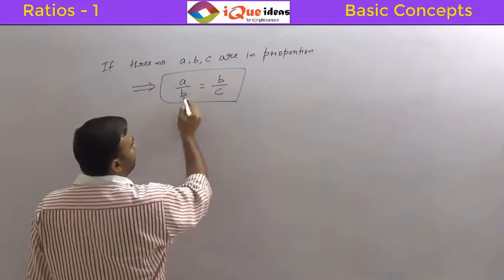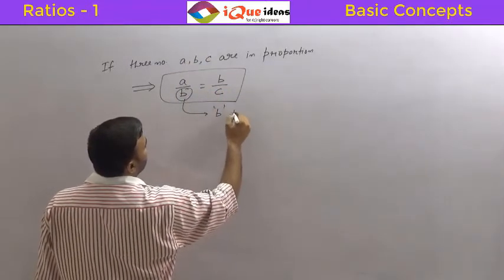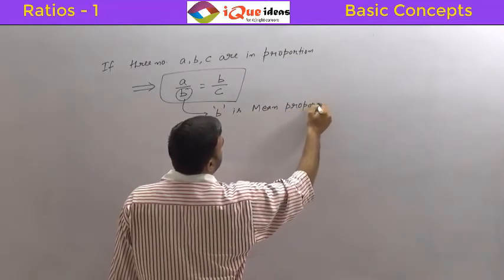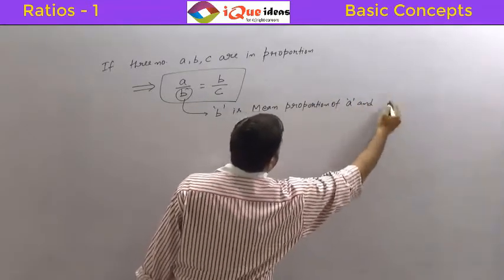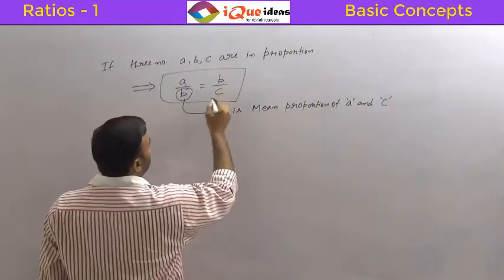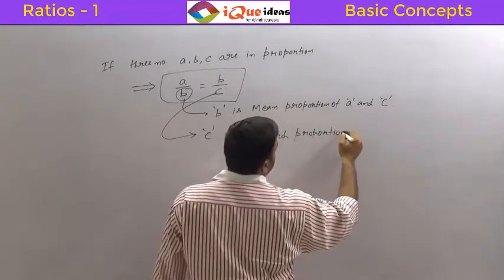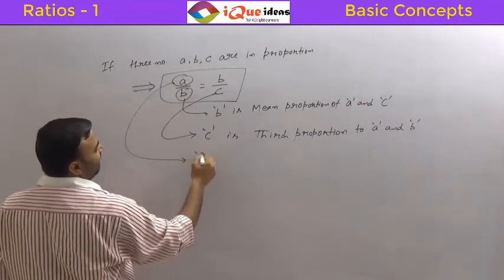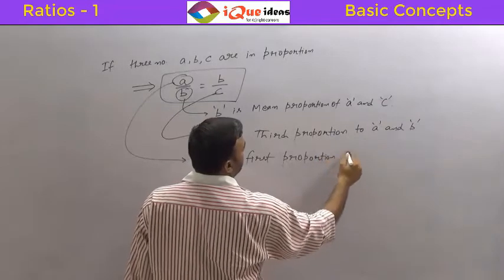The number in the middle will always appear twice, and the number that appears twice is called mean proportion. So B is mean proportion of A and C. Similarly, C is called third proportion — specifically, third proportion to A and B. And A can be called first proportion to B and C.